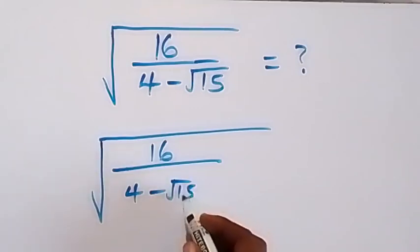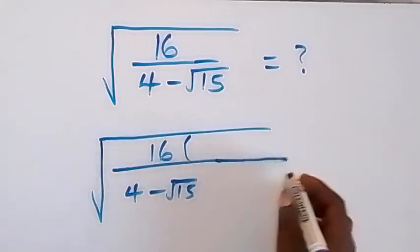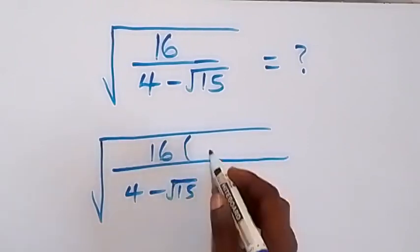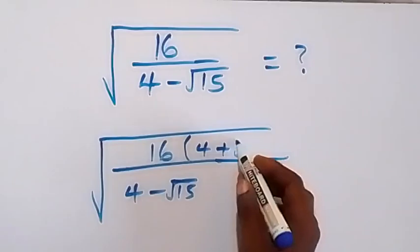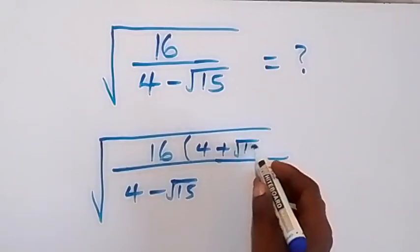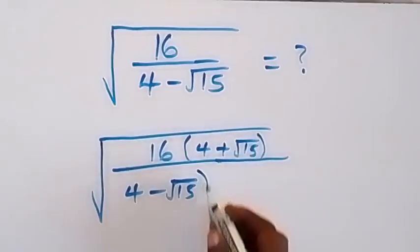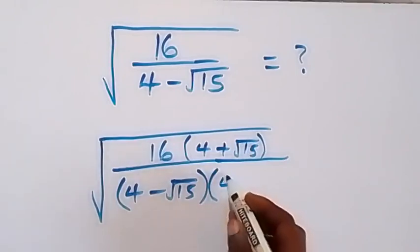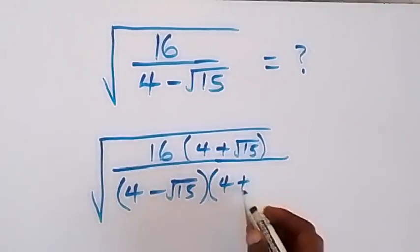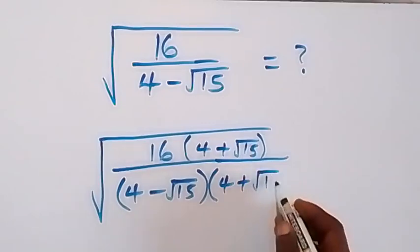Here we multiply and divide by the conjugate, which is 4 plus root 15. Then we also multiply this by 4 plus root 15.